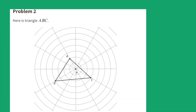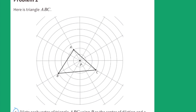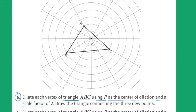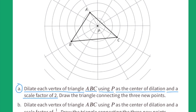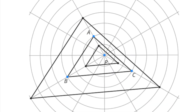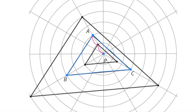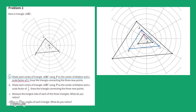Problem number two: Here is triangle ABC. Part A: Dilate each vertex of triangle ABC using P as the center of dilation and a scale factor of two. I'll trace triangle ABC in blue. Point A is a total of two units away from point P, the center of dilation. Since the scale factor is two, I need to multiply two times two to find the new location of point A.